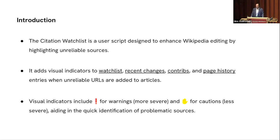I transform Jake's vision into working code. So what exactly is this Citation Watchlist? Simply put, it's a user script — custom JavaScript that you can install in your user account. It enhances Wikipedia editing by highlighting unreliable sources in an article. If a website of a particular domain name is added to an article, you can identify in which revision that link was added. It works in the Watchlist, in Recent Changes, in page history, and the user contributions page.